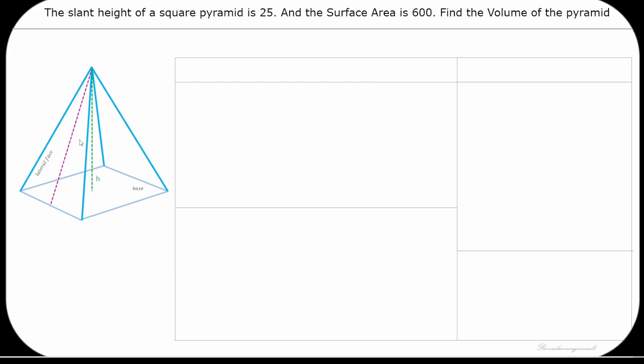This is a square pyramid with slant height 25 and surface area 600. Let's find the volume of the pyramid. The formula for the volume is 1/3 times base area times height.